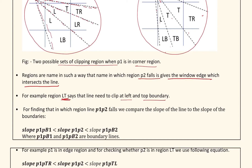For finding which region P1 and P2 fall in, we compare the slope of the line to the slope of the boundaries. The condition is: slope(P1,Pb1) < slope(P1,P2) < slope(P1,Pb2), where P1Pb1 and P1Pb2 are boundary lines. For example, if P1 is in an edge region and we are checking whether P2 is in region LT, we check if the slope condition holds between the boundary slopes.